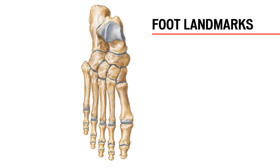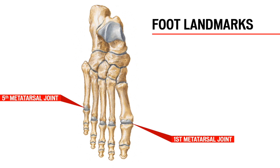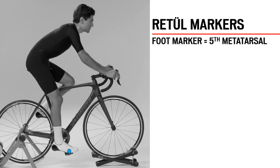If you feel along the outside of your foot, moving from the midfoot towards the little toe, you can locate a bony prominence. This is the fifth metatarsal joint. If that is the fifth, there must be a first — the first is located at what we commonly refer to as the ball of the foot. The large bony mass of the heel is named the calcaneus. The fifth metatarsal is where we place the foot marker. The heel marker goes on the calcaneus.